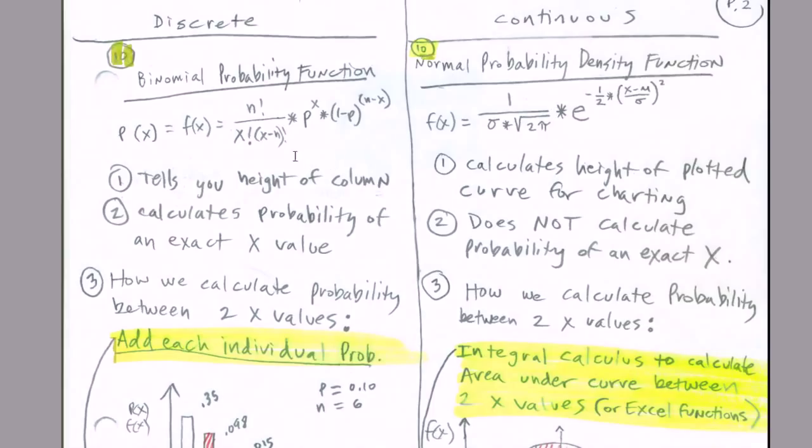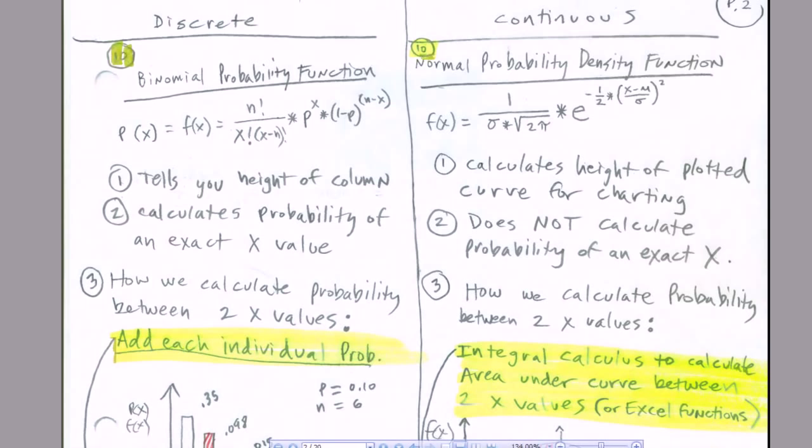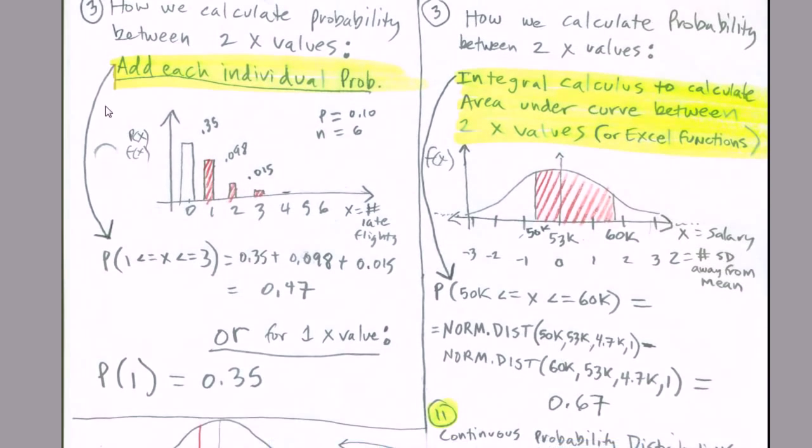Here's for our discrete. Here's for our continuous. We're going to look at two examples, the binomial probability function and for our normal curve, the normal probability density function. Now, whereas this binomial function told us the height of the column, it also calculated the probability of an exact x value. This will not do that. It will, however, calculate the height of the plotted curve when we chart it. But it will not calculate the probability of an exact x. Both binomial and the normal distributions can calculate between two x values. Again, for the binomial, we just simply added them and got between two x's. Over here, we're going to have to do integral calculus. Or we can use one of a few functions. We're going to see the norm.dist. We will give it the lower and upper values, and it will calculate the probability for us. Do the heavy lifting and do our integral calculus.